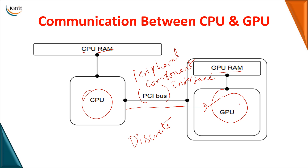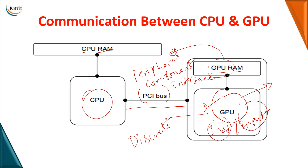The GPU performs the operations based on the data provided and stores the result in RAM, then sends the result back to the CPU. As I have been saying, the GPU alone will not work — the CPU has to give an instruction specifying what to execute and provides the input to the GPU. Based on the instruction and input, the GPU performs the operation and the result is sent back to the CPU. The PCI bus plays a major role in transferring data — both input and output — between the CPU and the GPU.